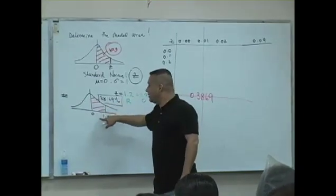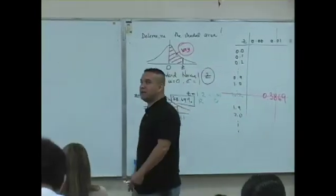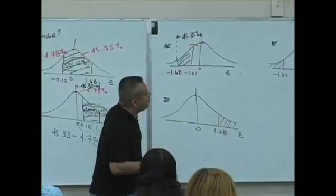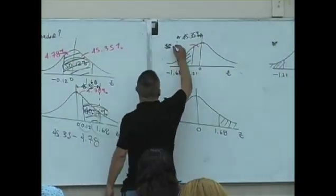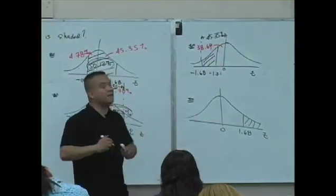We know the positive using this table. We did it already. But because of symmetry, this also is what? 38.69. Isn't that also 38.69% because of symmetry?